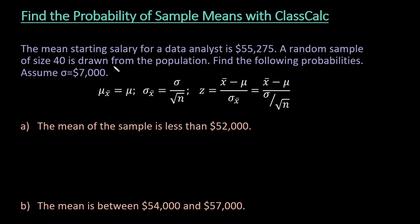So what we have here is the mean starting salary for a data analyst is $55,275. A random sample of size 40 is drawn from the population. Find the following probabilities, assume that sigma is $7,000.